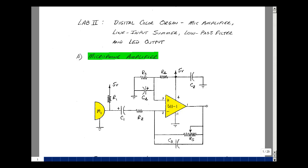In lab number two, we're going to continue to build a digital color organ. This week we're going to assemble the microphone amplifier, the line input summer, a low-pass filter, and an LED output.